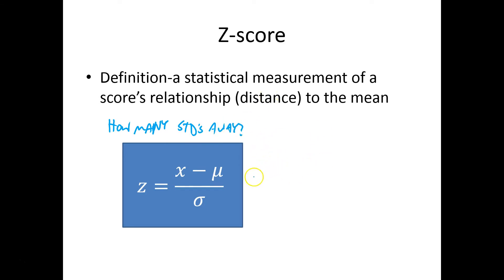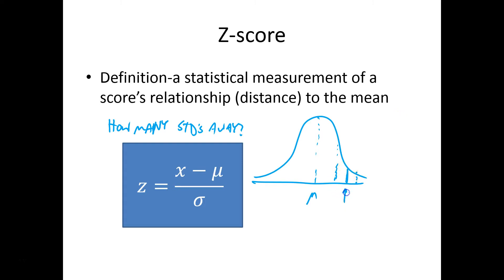So for example, on our normal curve, if we have the average right in the middle — there's mu — and standard deviations at the inflection point. If I had a value like right here, that z-score would be like 1.5, because it's 1.5 standard deviations away. Over here maybe negative 0.75, because it's 0.75 standard deviations away on the left side. To find these values, you take the x value, subtract the average, and divide by the standard deviation.